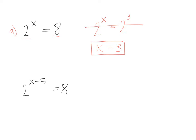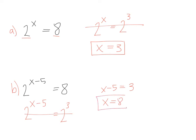Problem B is pretty much the same. I rewrite it as 2 to the x minus 5 equals 2 to the third. Since their bases are the same, their powers are the same, and we just solve for x — add 5 over and we get x equals 8. You can plug that value back into the original equation to verify: 8 minus 5 is 3, and 2 to the third is 8, so it works.